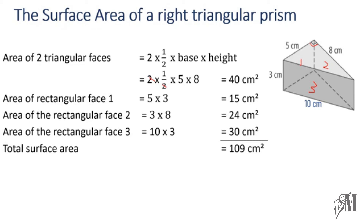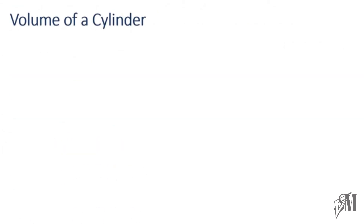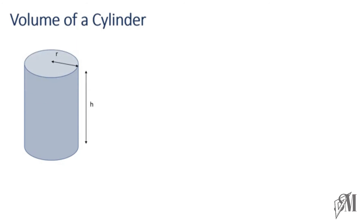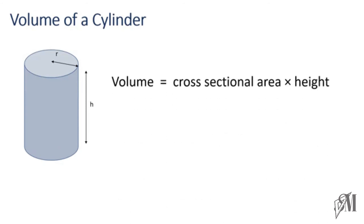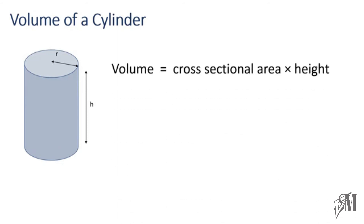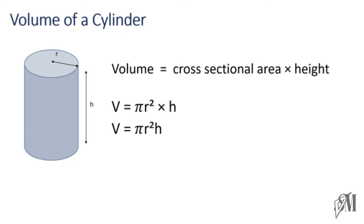Now we move to volume. First, the volume of a cylinder. To find the volume of a cylinder, find the base area and multiply it by the perpendicular height. The cross-sectional area is πr² (since the base is a circle), so the volume of a cylinder = πr²h.